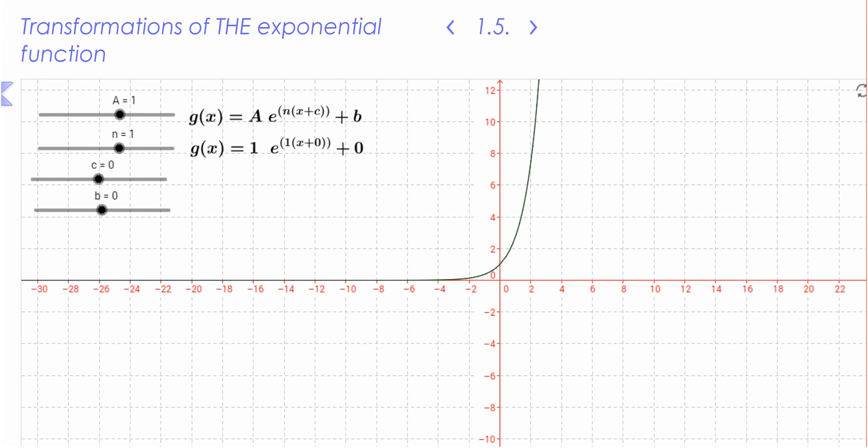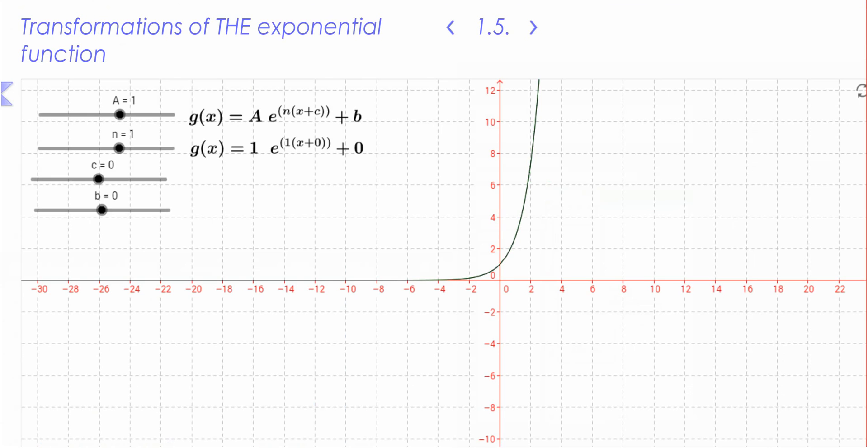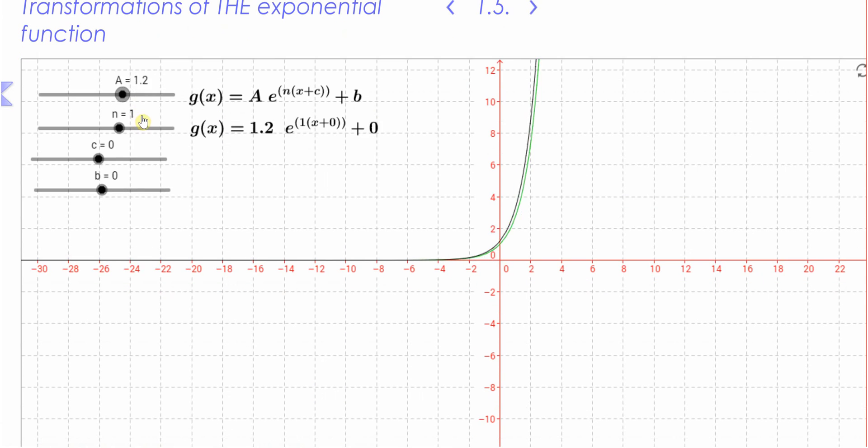Here we have the exponential function. If you want to find these on the internet, all you need to do is put in the URL that you can see here. Just put that into your browser and you'll have a GeoGebra book come up. You'll be able to access each of these, change these values and see how it transforms your graph.